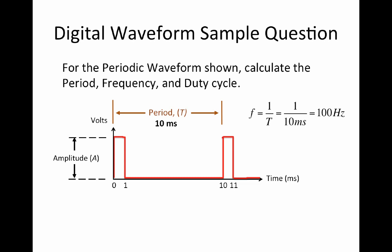To calculate the duty cycle, we need to determine the pulse width TW from the periodic digital waveform. Here we can see that the pulse width is 1 ms. The duty cycle is calculated from the ratio of the pulse width TW to the period T, and can be expressed as a percentage. Duty cycle equals pulse width divided by period multiplied by 100%, which is 1 ms divided by 10 ms multiplied by 100%, which equals 10%.